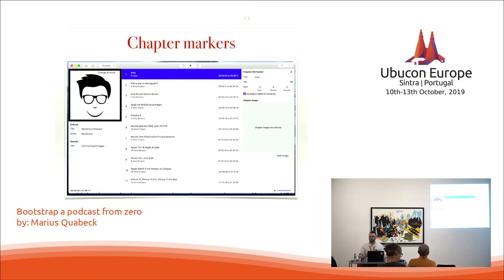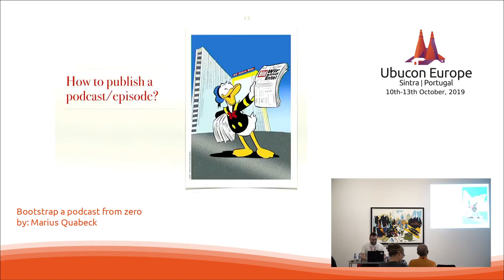So after you've done the editing, the artwork, and the chapters, you just export it to one file and you're basically done. That's the file you can then use to upload to wherever you want.